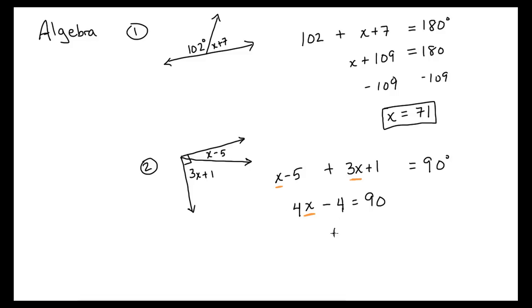So now we have two more steps, it's a two-step equation, pretty simple. We want to always add or subtract before we multiply or divide. They cancel out, 4x is equal to 94, and then we want to divide by 4 on both sides.